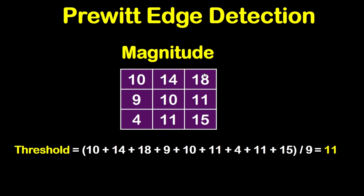Now after getting the magnitude matrix, we will get the threshold, and based on this threshold we will determine the edge matrix. To get the threshold, we get the average of these numbers: (10 + 14 + 18 + 9 + 10 + 11 + 4 + 11 + 15) ÷ 9, which is approximately 11. So this is the threshold.